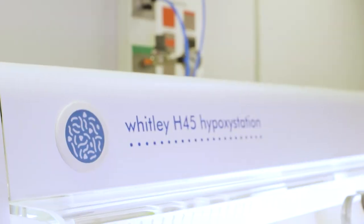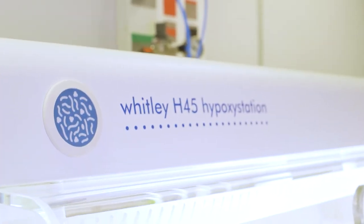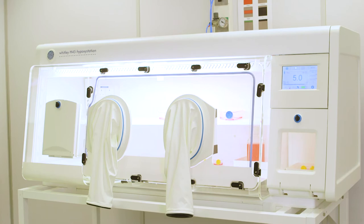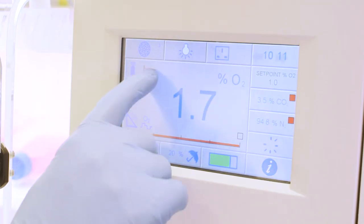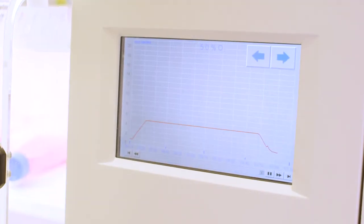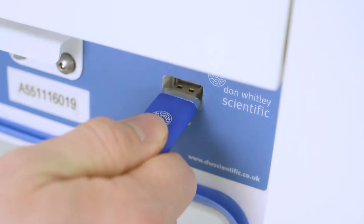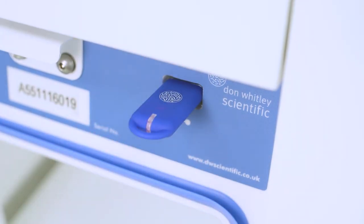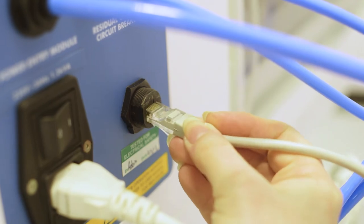The hypoxic station records parameters such as temperature, humidity, oxygen and CO2 levels. Recorded data can be viewed on the hypoxic station touch screen or downloaded in a few seconds via the USB interface or via an ethernet connection.